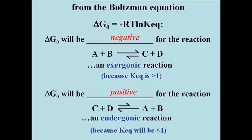By the same token, the reverse reaction written this way, C plus D going to A plus B, must be endergonic, or energetically unfavorable in a closed system under standard conditions. Here, the equilibrium constant for an endergonic reaction will, by definition, be less than 1. Figure that out by looking at the Boltzmann equation.